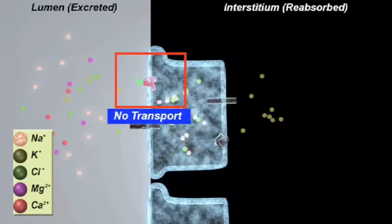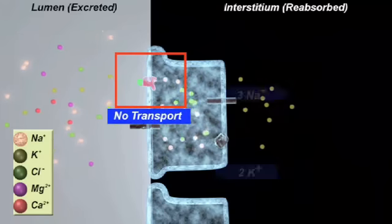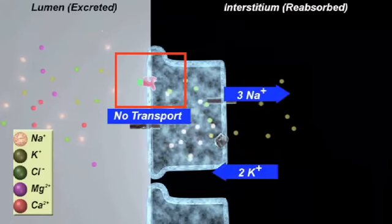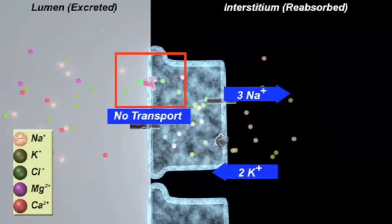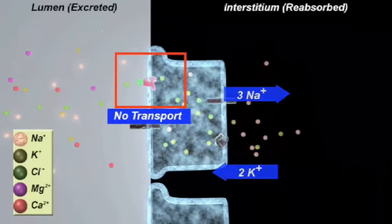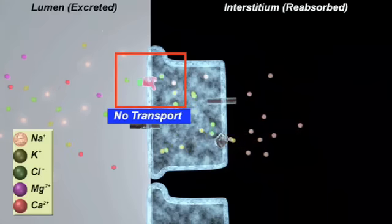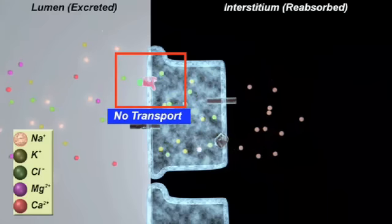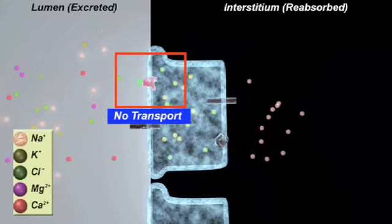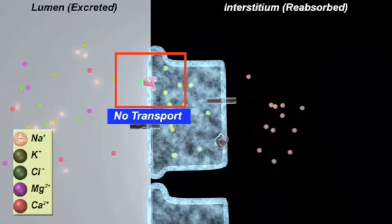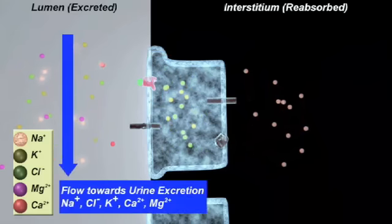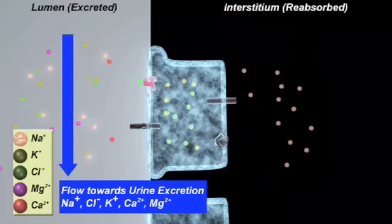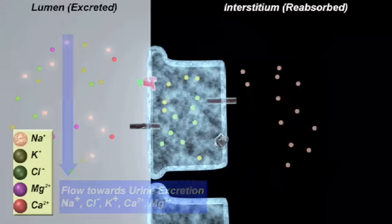When the sodium potassium chloride transporter is blocked by the loop diuretics, the sodium potassium exchange begins. But the sodium deficit cannot be replaced by the sodium from the lumen. This blocks the overall reabsorption of sodium from this site in the nephron. The net result is greater excretion of sodium, chloride, potassium, calcium, and magnesium in the presence of the loop diuretics.